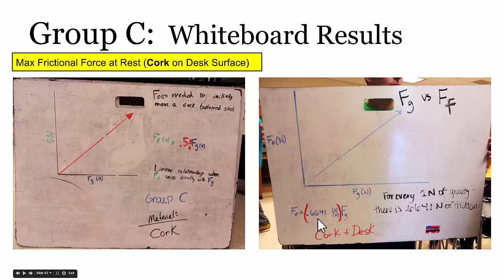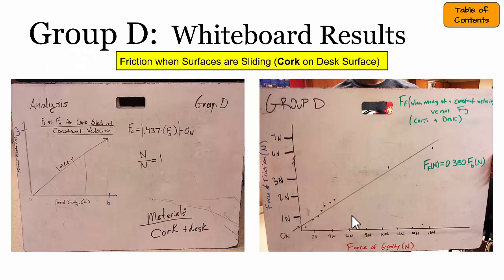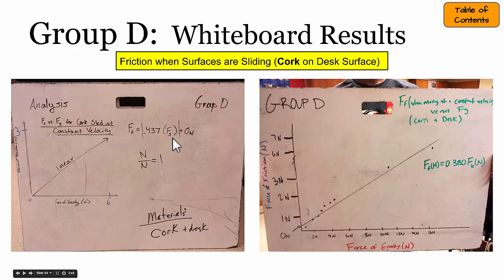Another group's experimental data found that the slope of their line showed that the force of friction was about 66 percent, or two-thirds, of the size of the force of gravity. The groups that used the same surfaces and investigated the size of the frictional force while the objects were sliding found a similar type of relationship — that the force of friction was proportional to the force of gravity, a linear relationship.